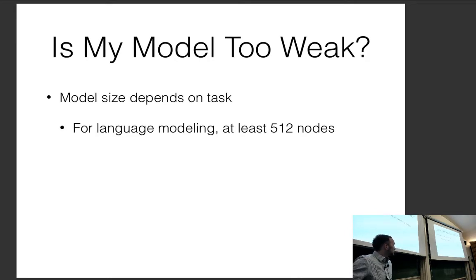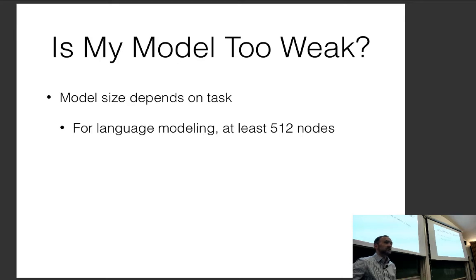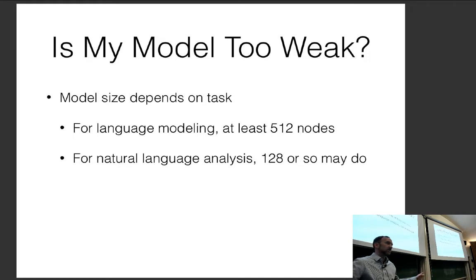For example, if you're using an LSTM or recurrent neural network for language modeling where you predict the next token, you'll need at least 512 nodes in one layer before you get any reasonable results. For natural language analysis tasks like text classification or part-of-speech tags, you'd still need around 128 nodes — that's the absolute minimal size I would suggest. Bigger models will likely do better, and once you get this small you might not even be able to fit your training data.